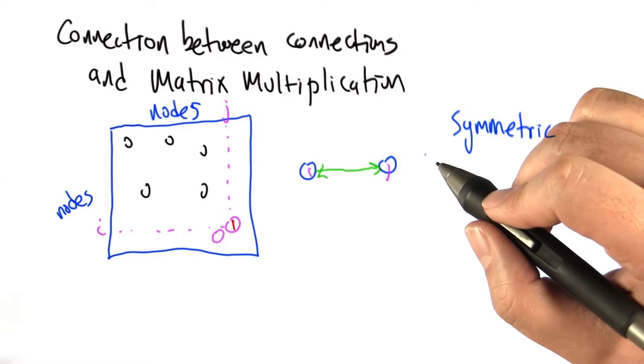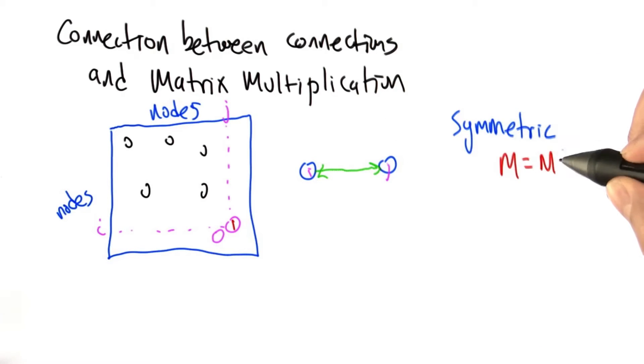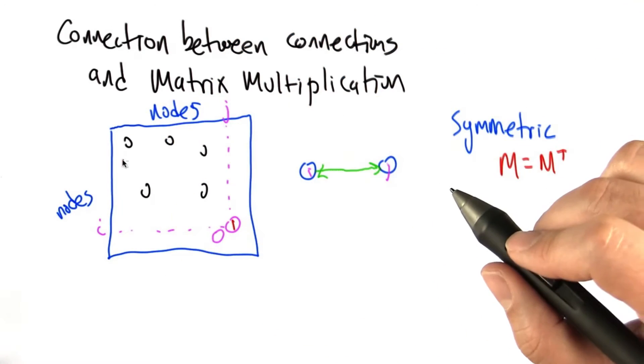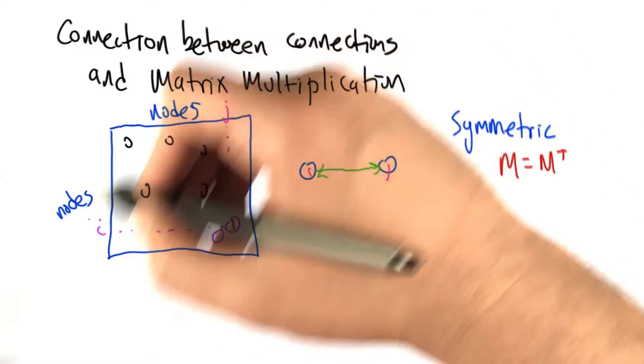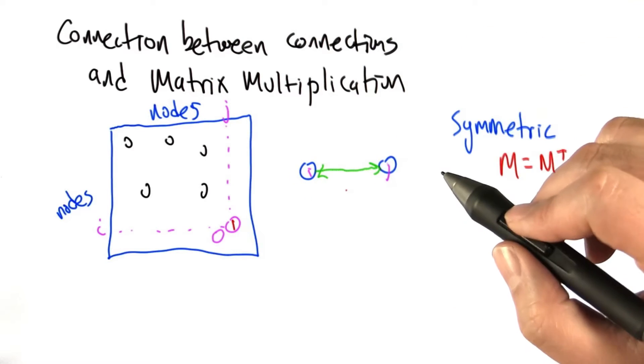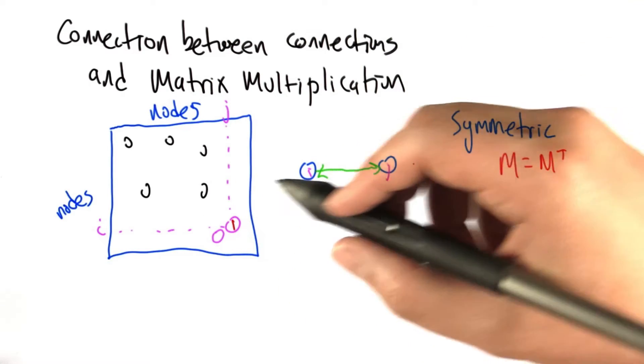I'm not going to get into matrix terminology, but if you're familiar with it, you'll recognize what a symmetric matrix is. The matrix equals its own transpose if we flip things the other way, which is basically natural. If we're just interchanging the nodes, since the connections are bi-directional, we'll have the same matrix again.